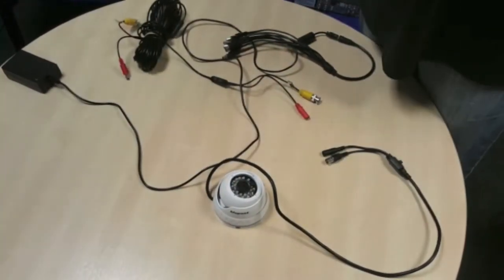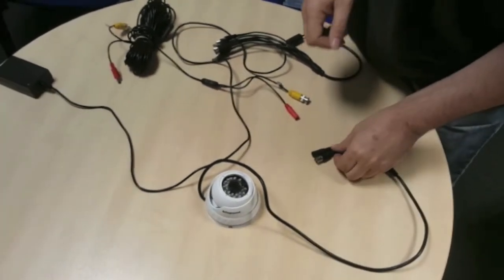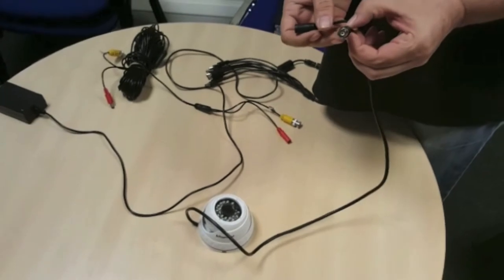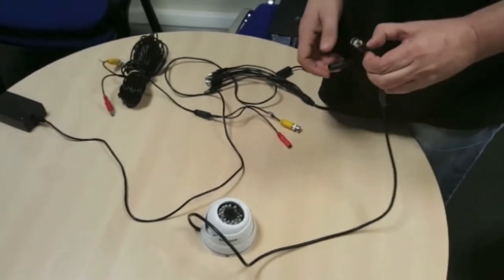I'll show you how to set up a Bluepoint camera which has a BNC connector. A BNC connector looks like this with a bayonet on the end and won't traditionally connect straight to your DVR.